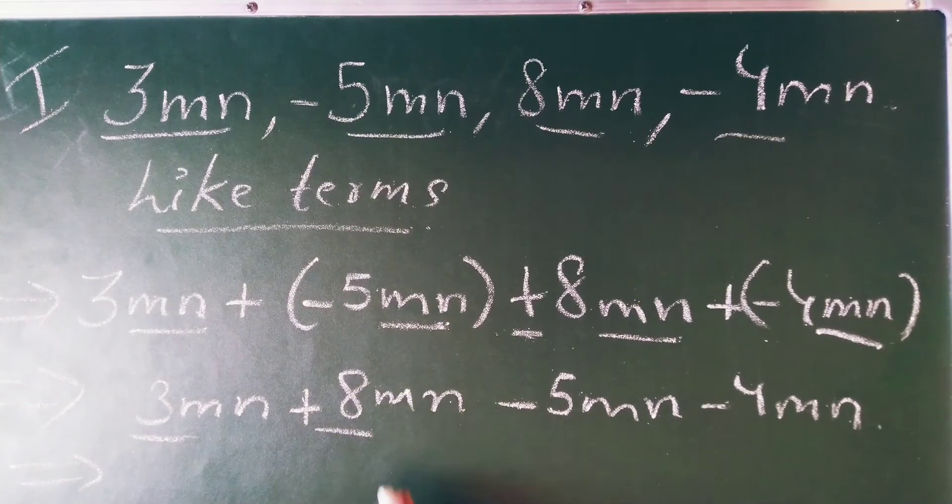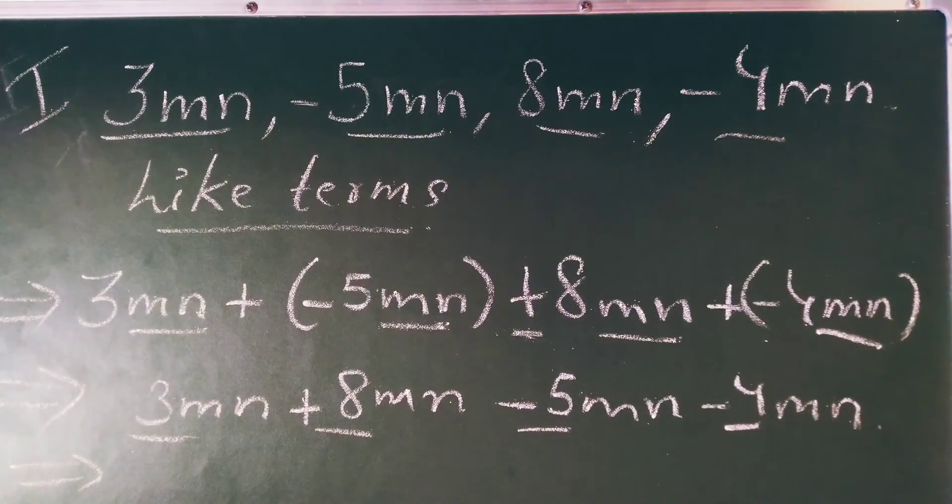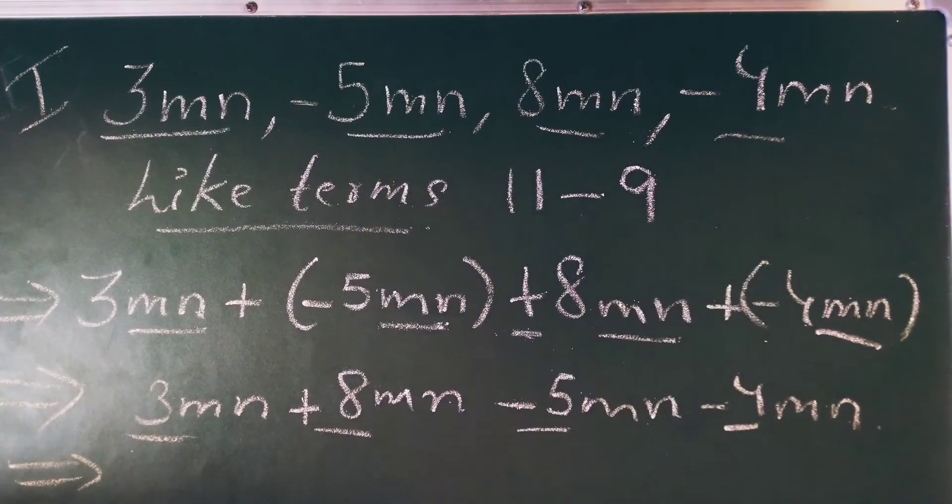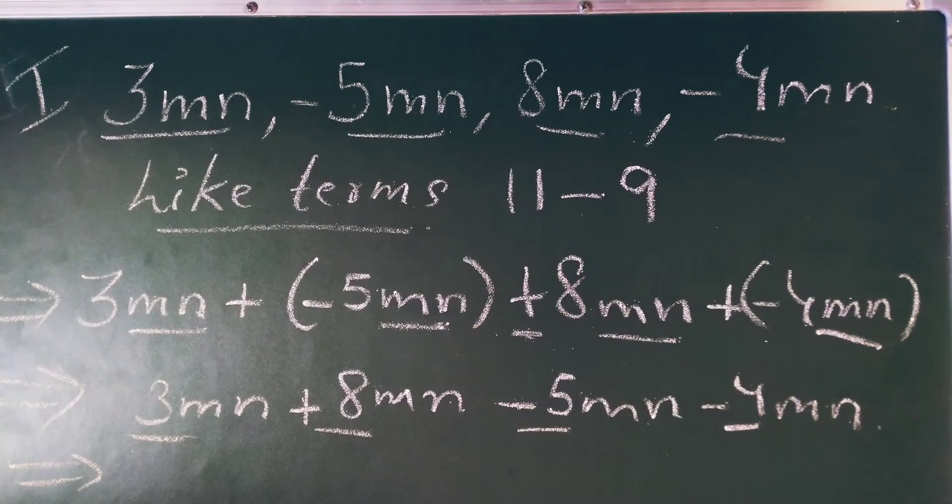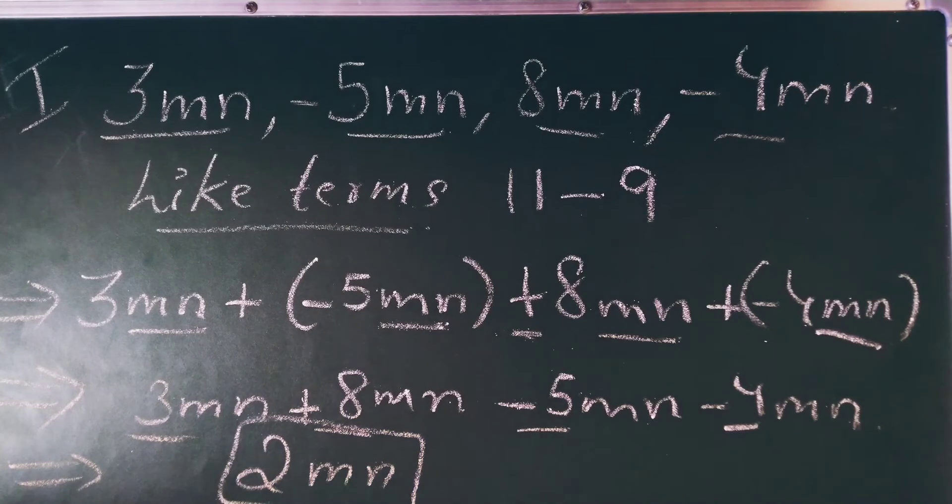So 3 plus 8 is 11, and minus 5 minus 4 is minus 9. So 11 minus 9, what is 11 minus 9? That is 2. So I will get the answer as 2mn. So this is the answer.